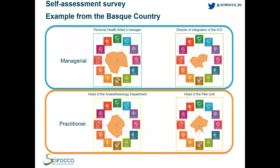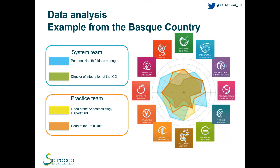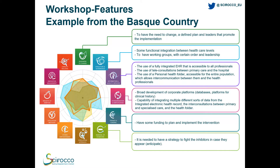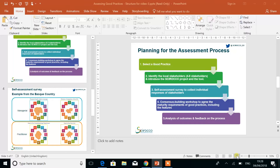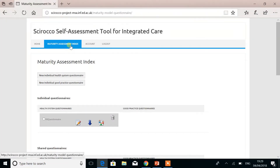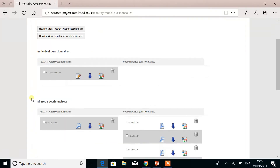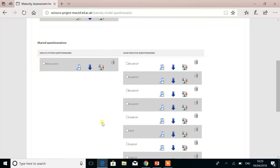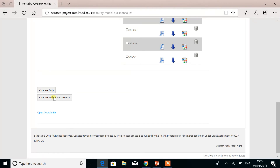As soon as the different stakeholders have filled in individual questionnaires, you may end up — like in the case of this bus country good practice — with very different questionnaire replies. During the consensus meeting, you will want to superimpose these different questionnaire replies in order to see where people tend to agree and where greater differences exist. You will also like to reach a consensus about the features that the good practice depends on from its healthcare system for each of the different dimensions. The tool also offers support for this. As the coordinator of a consensus meeting, within your maturity assessment index page, you will be able to see all of the individual replies provided by the different stakeholders. You can select up to five of these replies and then scroll to the bottom of the screen and click on compare and enter consensus.